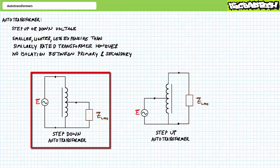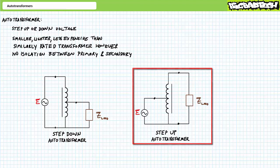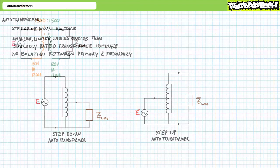A step-down auto transformer uses the complete single winding as the primary input and only a portion of it is used as a secondary output. Conversely, a step-up auto transformer uses only a portion of the single winding as the primary input and the complete winding is used as a secondary output. Let's look at each configuration separately.